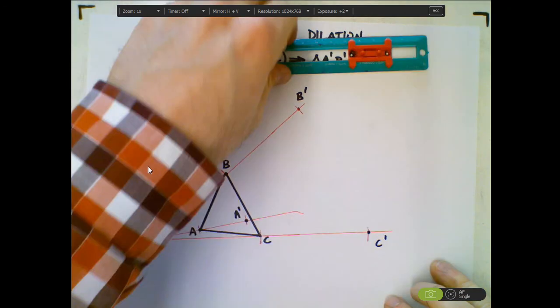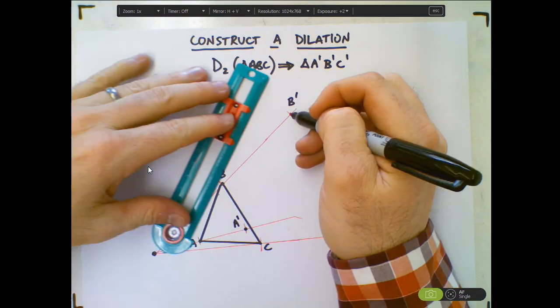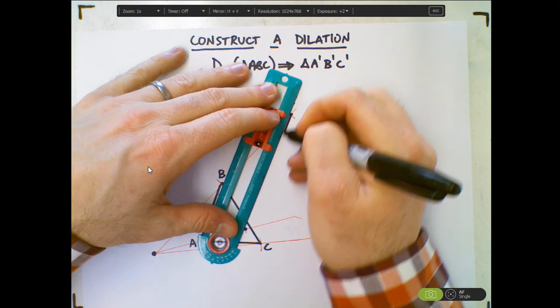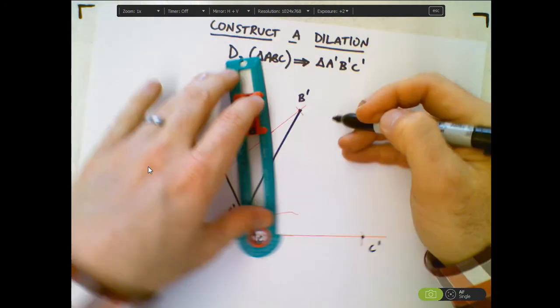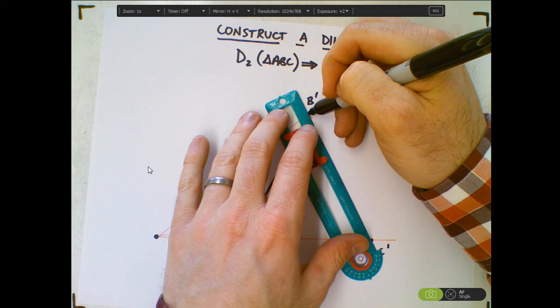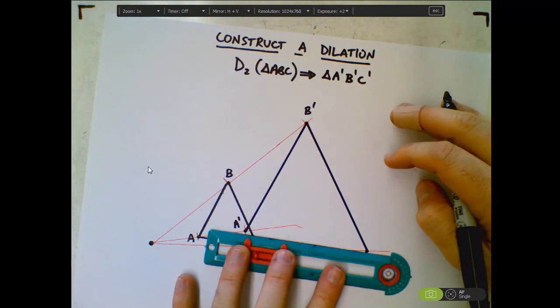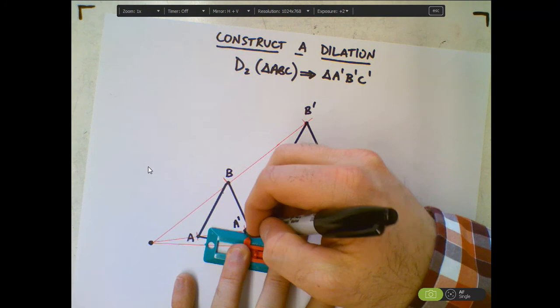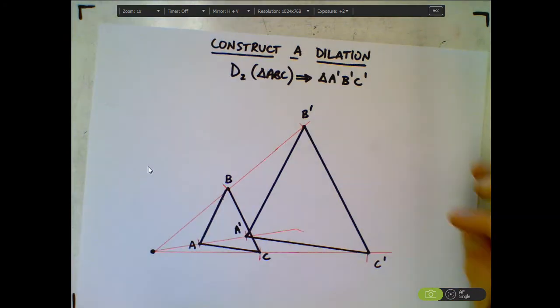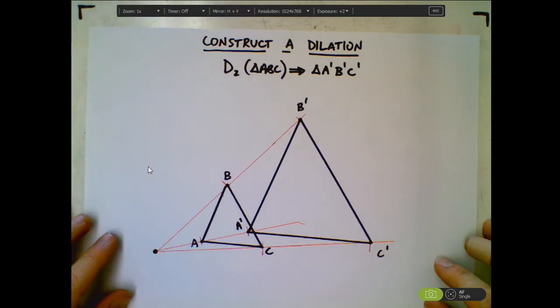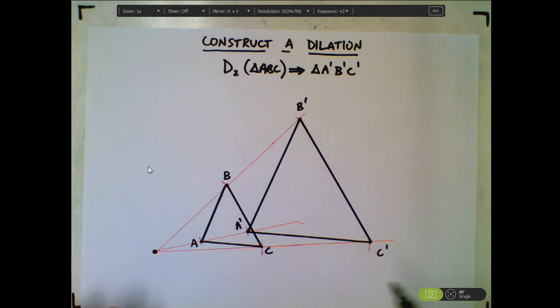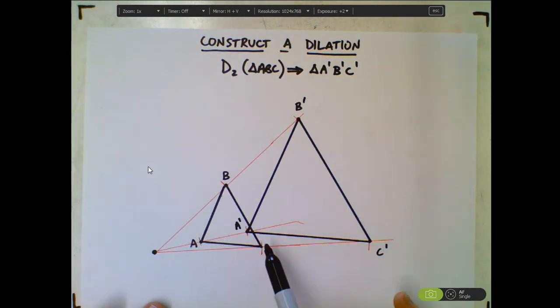So now all I have to do is connect those vertices. And there you have it. Triangle A'B'C' is the image of triangle ABC after a dilation with a scale factor of two.